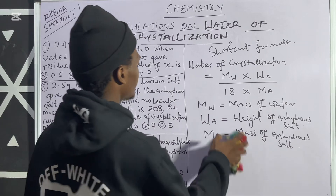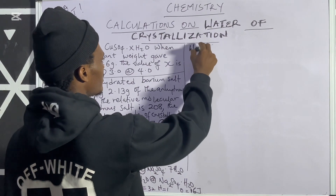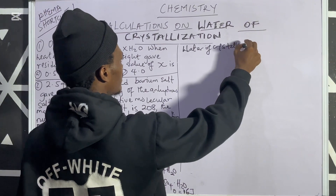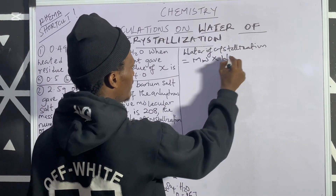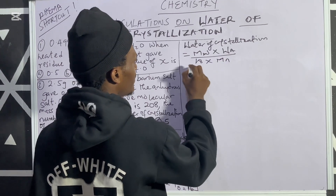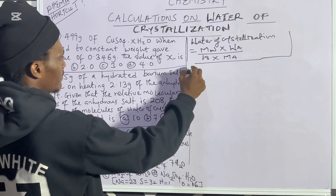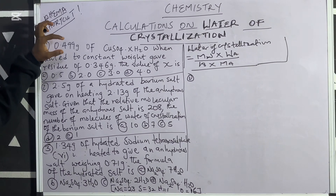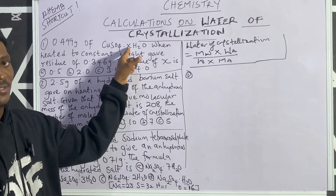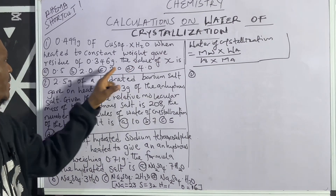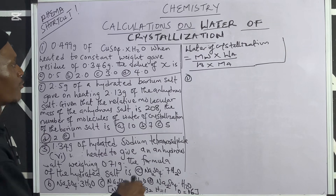Let's start by looking at question one. I'll write the formula here again: water of crystallization equals MW times WA over 18 times ME. Question one: we are given 0.499 grams of copper sulfate with an unknown value x before the water of crystallization — CuSO₄·xH₂O. When heated to constant weight, it gave a residue of 0.346 grams. The value of x is?